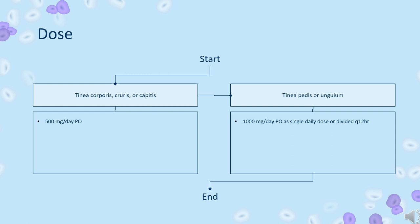Treatment duration is dependent on infection site. Tinea corporis: 2–4 weeks. Tinea capitis: 4–6 weeks, may be up to 8–12 weeks. Tinea pedis: 4–8 weeks. Tinea unguium: 4–6 months.